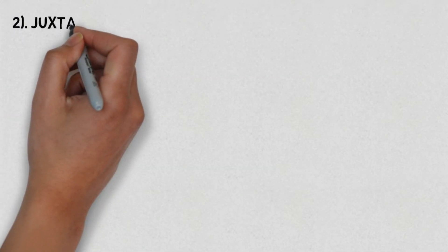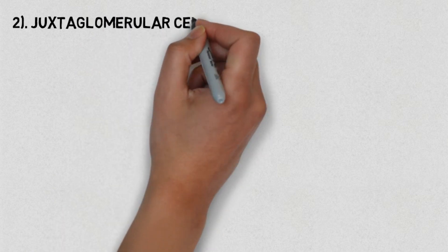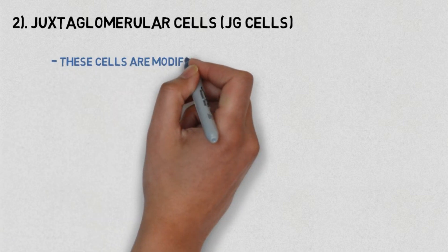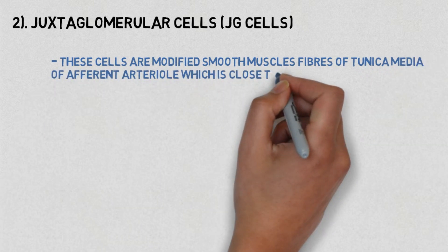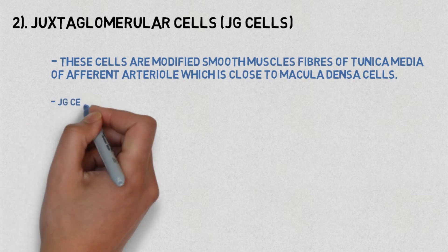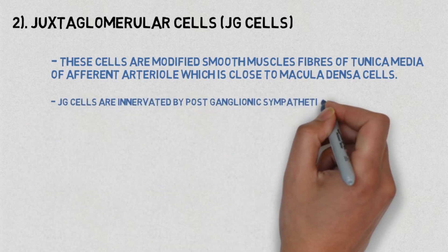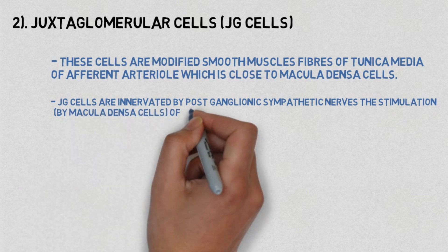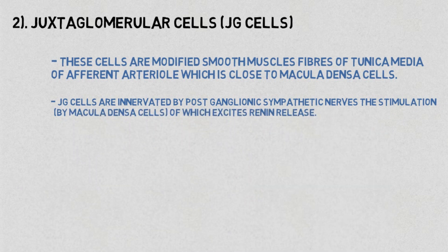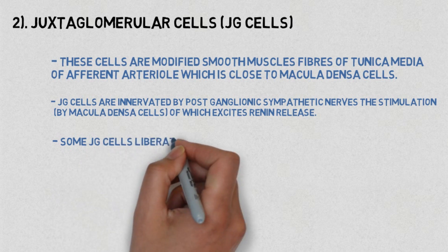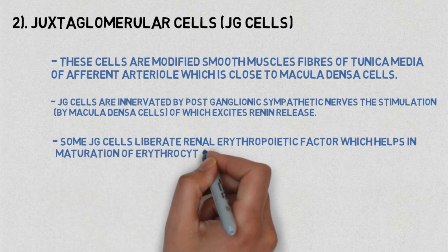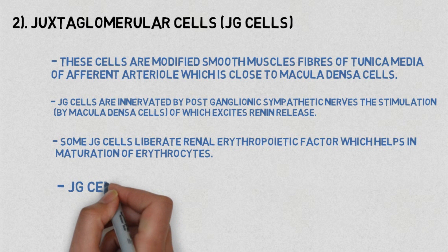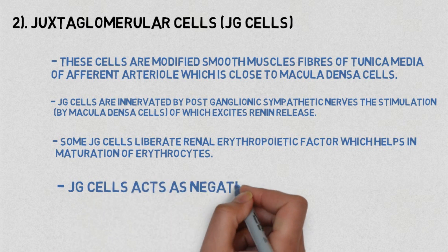Number two: juxtaglomerular cells, or JG cells. These cells are modified smooth muscle fibers of the tunica media of the afferent arteriole, which is close to the macula densa cells. The juxtaglomerular cells are innervated by post-ganglionic sympathetic nerves. Stimulation by macula densa cells excites renin release. Some juxtaglomerular cells liberate renal erythropoietic factor, which helps in the maturation of erythrocytes. Juxtaglomerular cells act as negative baroreceptors.